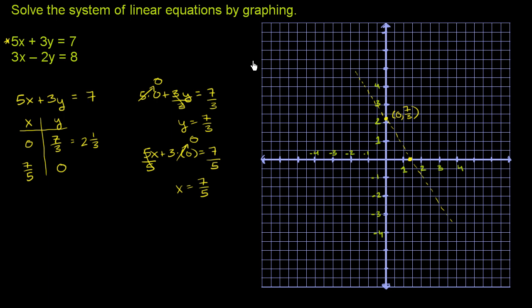Normally when you have to solve a system of equations by graphing, they give you cleaner numbers. But we'll do our best and see where these two lines intersect. So now let's work on the second equation: 3x minus 2y is equal to 8.